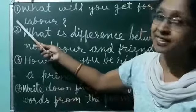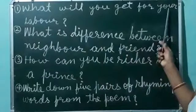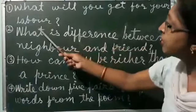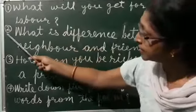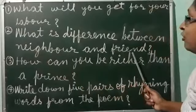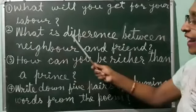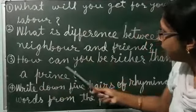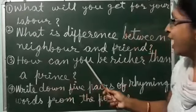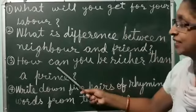Now there are some questions for you. Question number one: What will you get for your labor? Aapko apni parishram ke liye kya milega? Second: What is the difference between neighbor and friend? Padosi aur dost mein kya antar hai? Third: How can you be richer than a prince? Kaise aap ek rajkumar se bhi zyada dhani ho sakte hain?